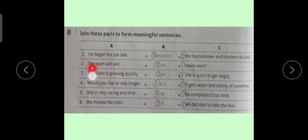Second sentence: the team will win. Now, we will use the preposition from column B: if. Sentence number 2 will be the top batsmen and bowlers to do well. Sentence number 3: the plant is growing quickly because it gets water and plenty of sunshine.